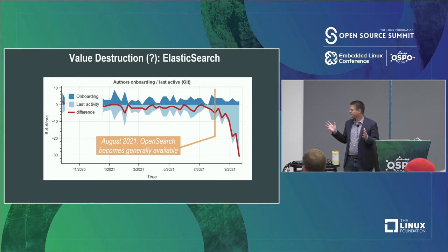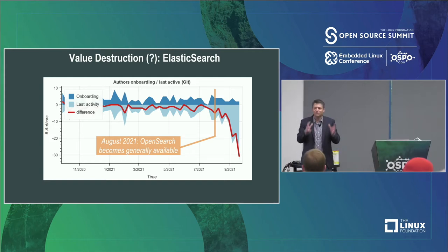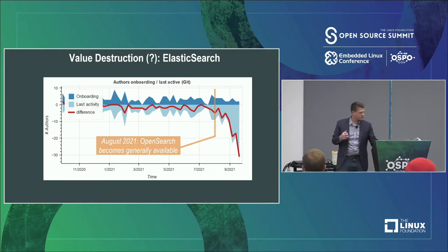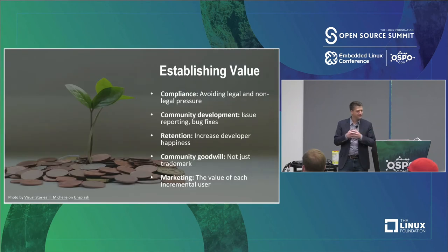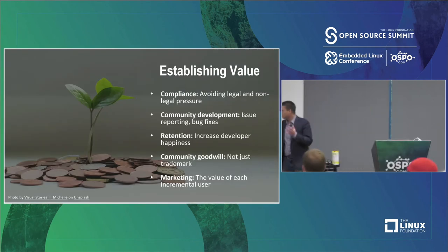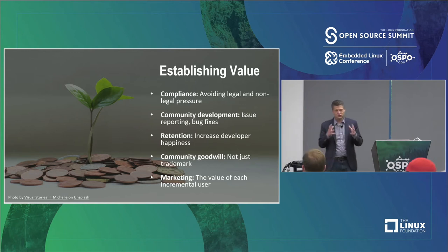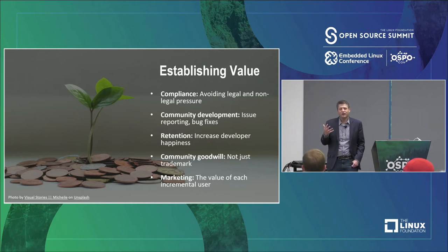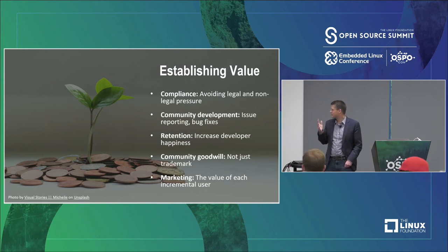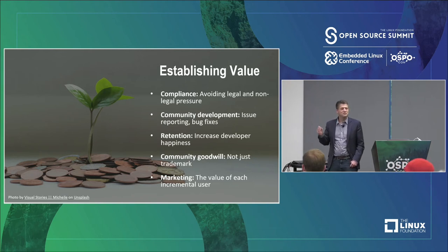We have been able to see that if you don't treat your community well, they can go away and they can take all the value with them. Because the value is not in the code — the value is in the community. This is actually something that is well known. There are lots of things that OSPOs do that address this value. Most often we think of and justify our OSPOs in terms of compliance: legal and non-legal pressure, issue reporting, bug fixes. But I'm going to be talking about those last three items and giving you some real situations that I helped some companies with.